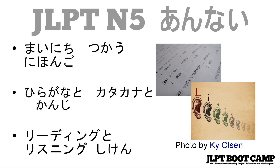N5の目標は少し分かることです。ひらがなとカタカナを覚えましょう。ローマ字はやめましょう。日本語のアルファベットを勉強しましょう。N5はスピーキングとライティングの試験でありません。N5はリーディングとリスニングの試験です。つまり、日本語が話せない人も合格できます。 — N5's goal is to understand a little bit. Learn hiragana and katakana, stop using romaji. N5 is not a speaking or writing test — it is a reading and listening test. That means even people who can't speak Japanese can pass.